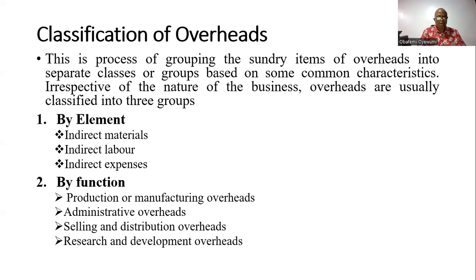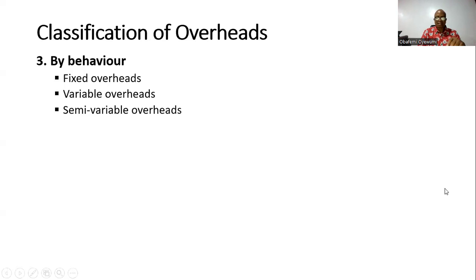By function, we're talking about classification based on the function that each overhead performs. We have production or manufacturing overheads, administrative overheads, selling and distribution overheads, and research and development overheads. Whichever function they perform will serve as a basis for classifying them. The last one is by behavior. When we talk about behavior, we talk about fixed overhead, semi-variable overhead, and variable overhead.